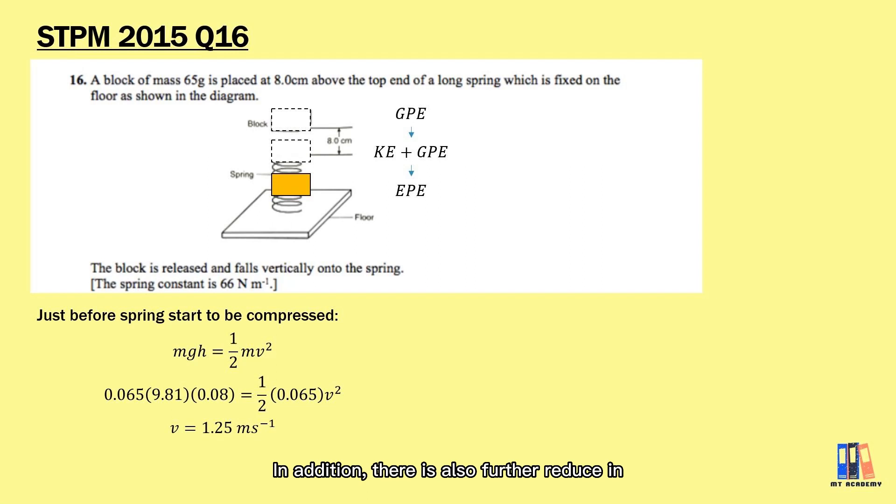In addition, there is also further reduction in gravitational potential energy since the object is still falling. So here we have decrease in both gravitational potential energy and kinetic energy is equal to the increase in elastic potential energy.